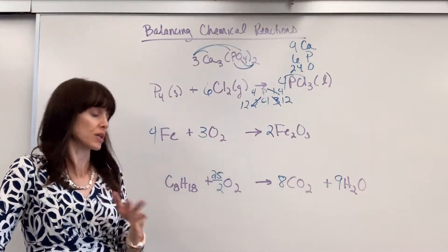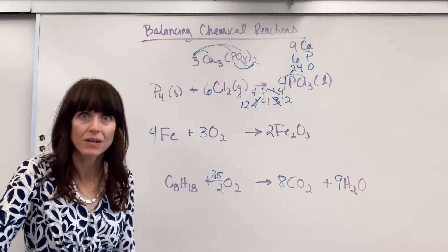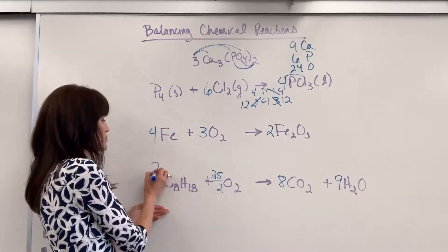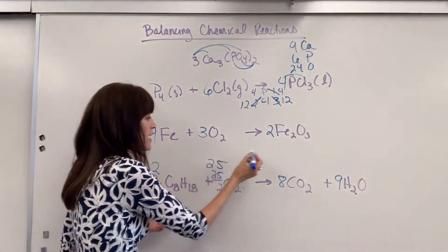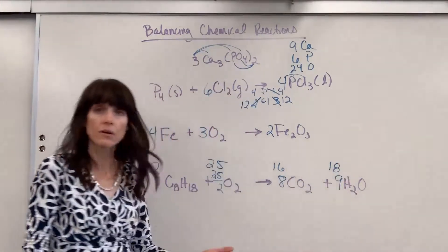Now, if your teacher does not want you to leave any halves, here's the easy way to get rid of it. Multiply everything through by two. You'd have two, 25, 16, and 18. And you can go ahead and check that.